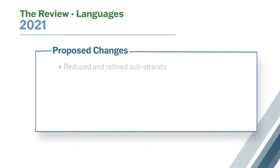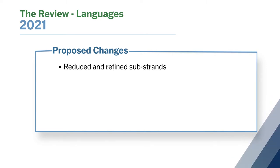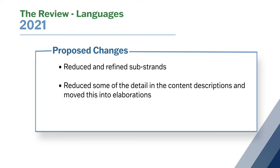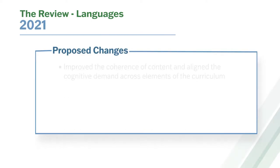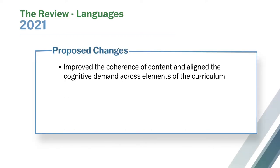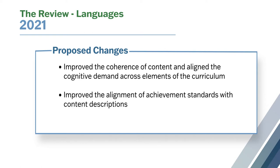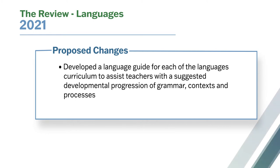We've proposed the following revisions to the languages curriculum: reduced and refined substrands; reduced some of the detail that clutters content descriptions and moved this into elaborations; improved the coherence of content; aligned the cognitive demand across elements of the curriculum; improved the alignment of achievement standards with content descriptions; refined content elaborations; and developed a languages guide for each of the languages curriculum to assist teachers with a suggested developmental progression of grammar, contexts and processes.